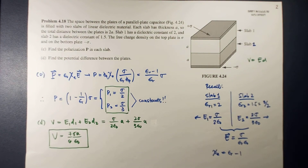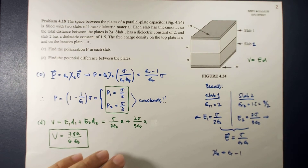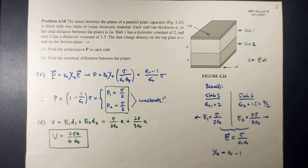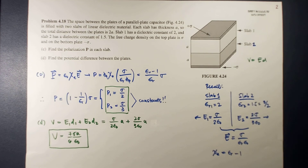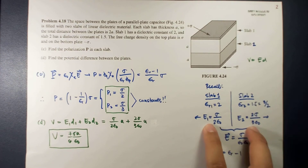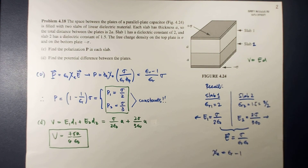So that's our answer for parts C and D — the polarization in each slab and the potential difference between the plates. In the next video, we will answer the remaining parts: finding the location and amount of all bound charge, and recalculating the field in each slab to confirm our answer for letter B. I hope you learned something here — see you in the next video. Thank you for watching.